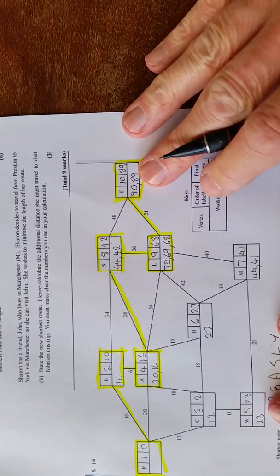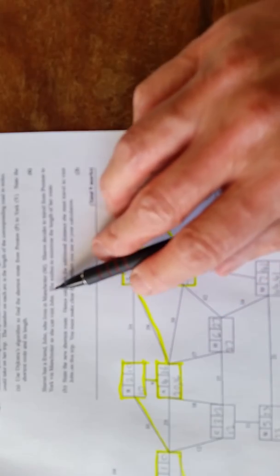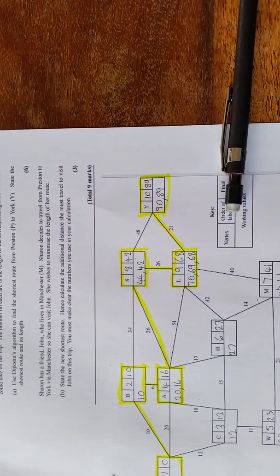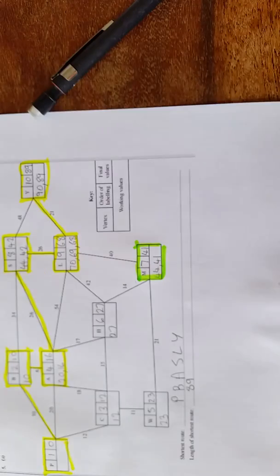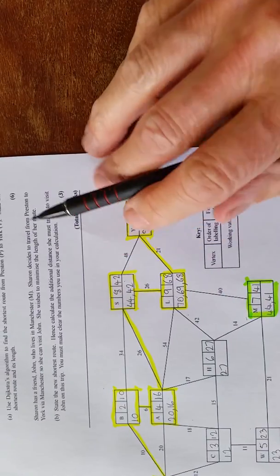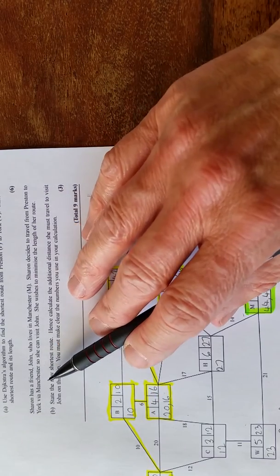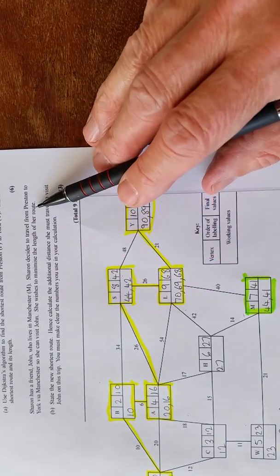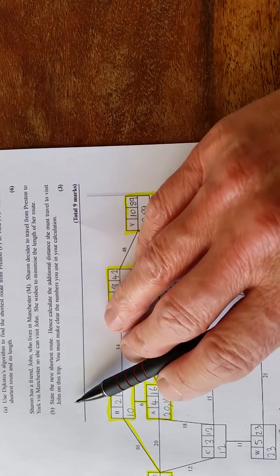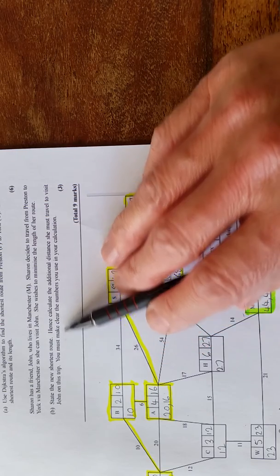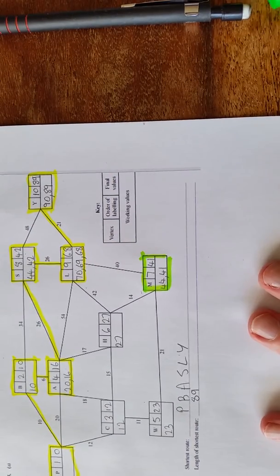Let's have a little question B. It says here Sharon has a friend John who lives in Manchester M. Sharon decides to travel from Preston to York via Manchester, so going from P to Y via M, so she can visit John. She wishes to minimize the length of her route. State the new shortest route. Hence, calculate the additional distance she must travel to visit John on this trip.